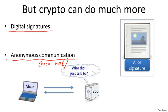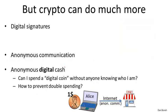One interesting thing about this anonymous communication channel is it's bi-directional. Even though Bob has no idea who he's talking to, he can still respond to Alice and Alice will get those messages. Once we have anonymous communication, we can build other privacy mechanisms.